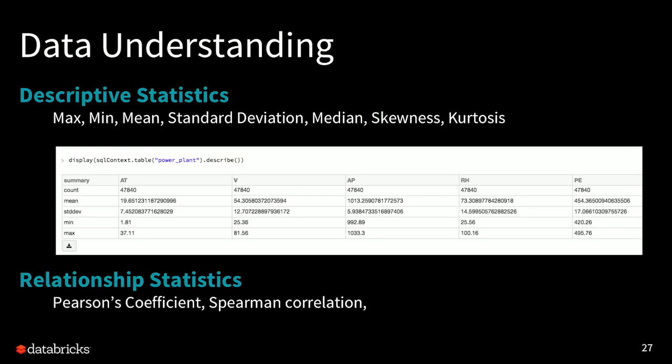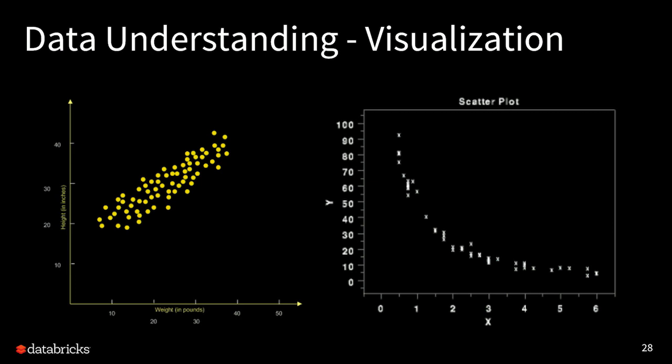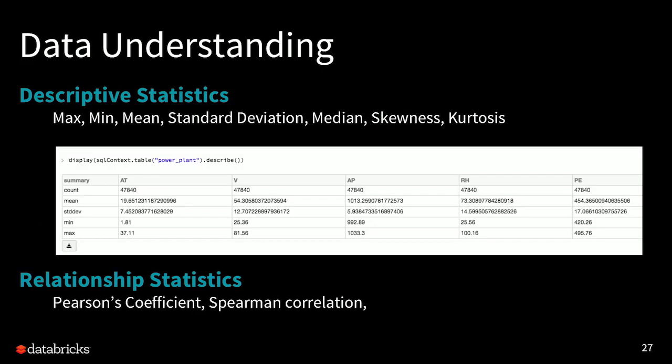Within Spark, one of the ways you can do data understanding is with simple traditional statistics — things like max, mean, standard deviation. For more advanced statistics, you have skewness and kurtosis, or looking at relationships like Pearson coefficients or Spearman correlations. You can also do visualizations — on the left side we're looking at a scatter plot, which is a good way to determine if your data has a linear correlation, or on the right side, more of a logistic correlation. You can look at things visually as well as from a statistical perspective.